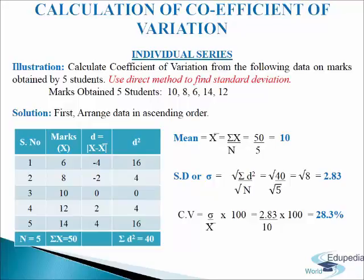We will add up the values and get sigma D squared equals 40. Now we will calculate standard deviation, which equals the square root of sigma D squared divided by n. We will put in the values and get 2.83 as standard deviation. Now we will calculate CV, coefficient of variation, which equals standard deviation divided by mean multiplied by 100. That is 2.83 divided by 10 multiplied by 100, giving 28.3% as the coefficient of variation. This is how we calculate coefficient of variation in individual series using the direct method.